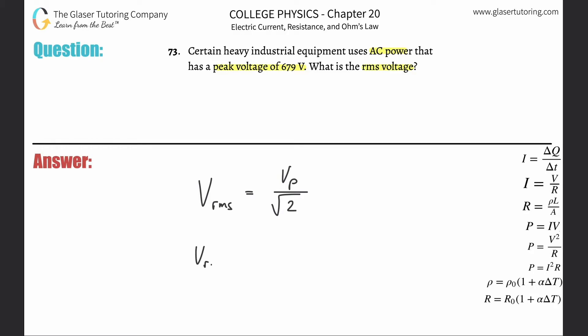So the root mean square voltage here is simply going to be the peak voltage of 679 divided by the square root of two. Plug it into the calculator: 679 divided by square root of two, and it's going to be 480 volts.